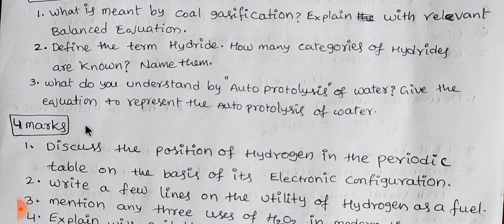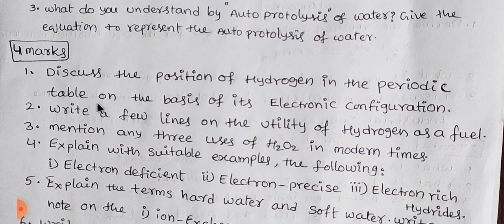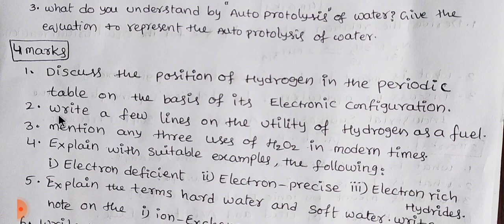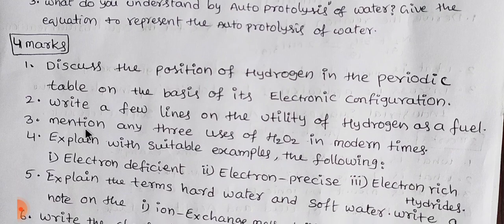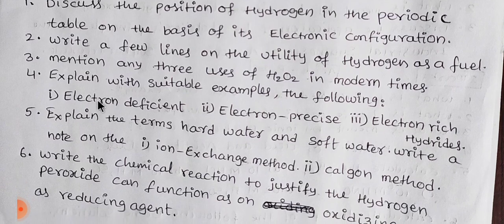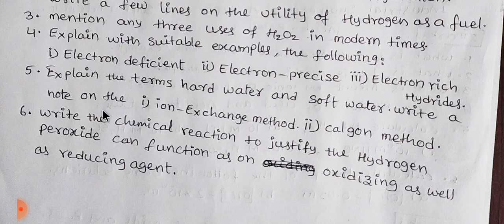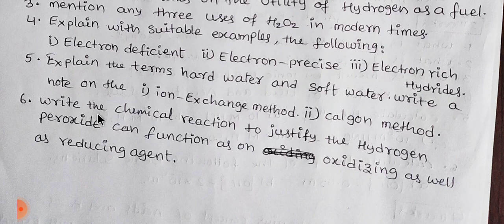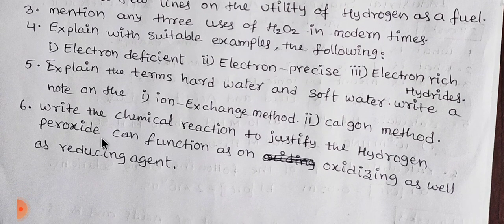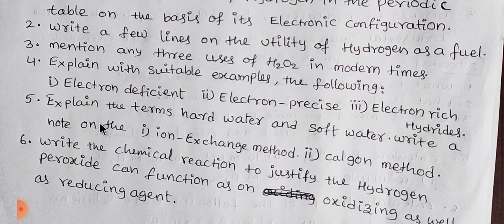For 4 marks and 5 marks: position of hydrogen in the periodic table. Next 2nd one: write a few lines on the utility of hydrogen as a fuel. Next 3rd one: mention any 3 uses of hydrogen peroxide. Explain with suitable examples of the following — electron-deficient, electron-precise, and electron-rich hydrides. Next, explain the terms hard water and soft water. Write a short note on the ion exchange method and Clark's method. Write the chemical reaction to justify that hydrogen peroxide can function as an oxidizing as well as a reducing agent.